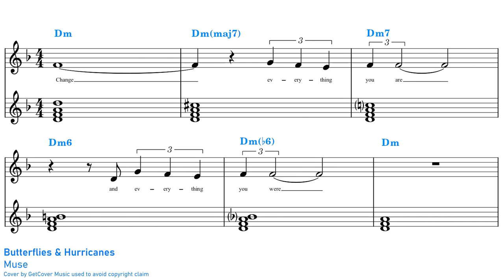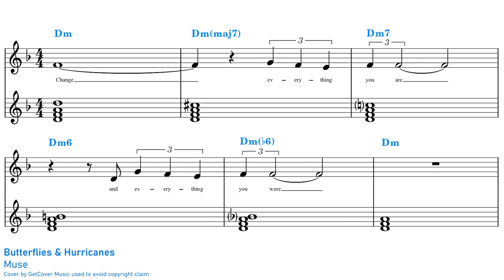A much longer line cliché can be found in "Butterflies and Hurricanes" by Muse. Here we start on a D minor chord, and then the top note D steps down one semitone at a time through six different chords in total, ending up with another voicing of a D minor chord. Usually line clichés will just go in one direction and then end — in Butterflies and Hurricanes, the line runs downwards.